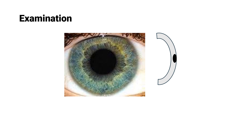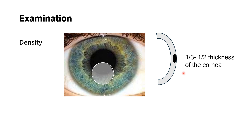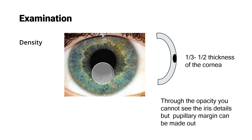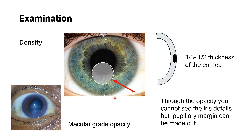For macular grade opacity, the opacity involves one-third to half of the thickness of the cornea. You can identify this on slit lamp. On torchlight, if you look through the corneal opacity, you are not able to make out the iris details but you can still see the pupillary margin — then you call it macular grade corneal opacity.